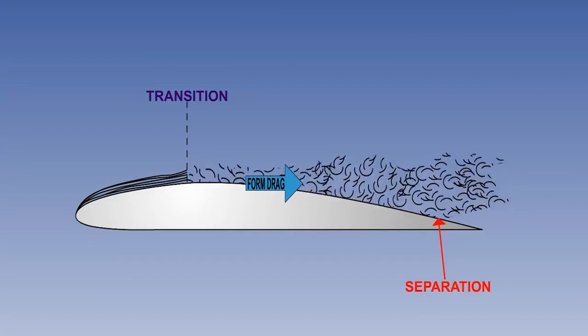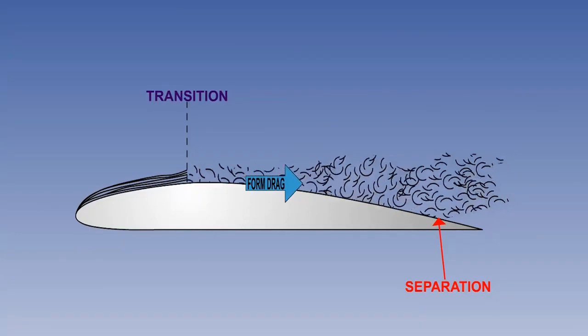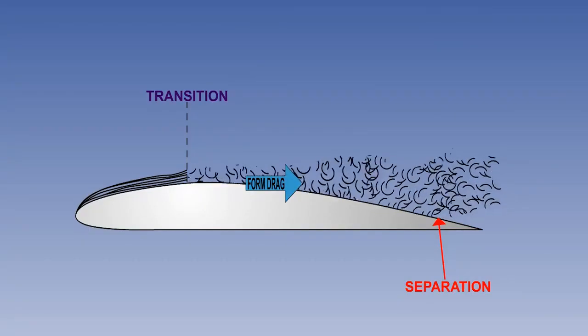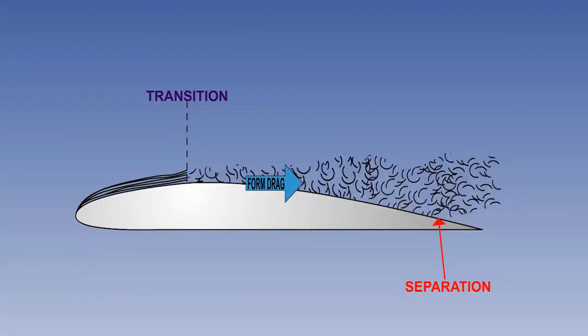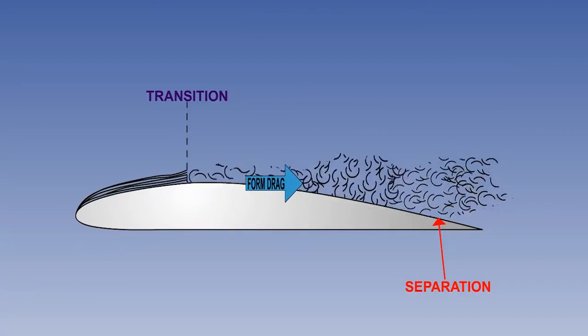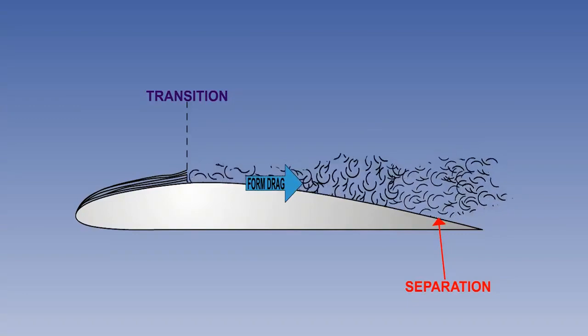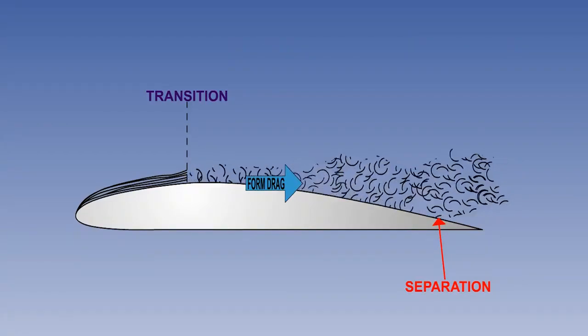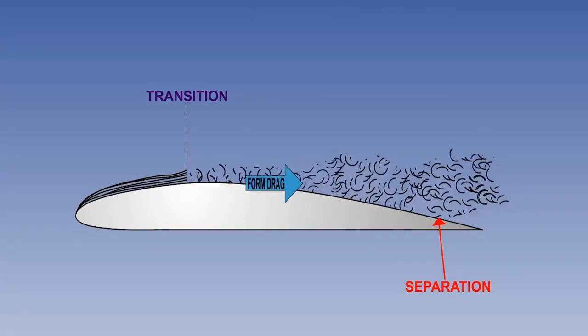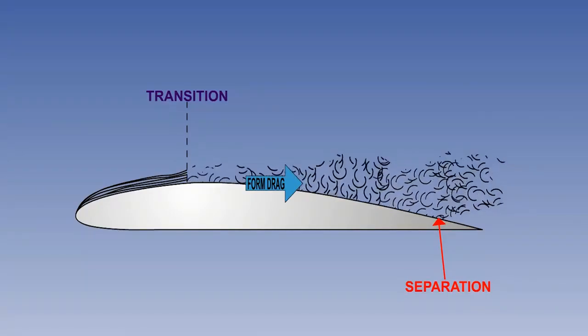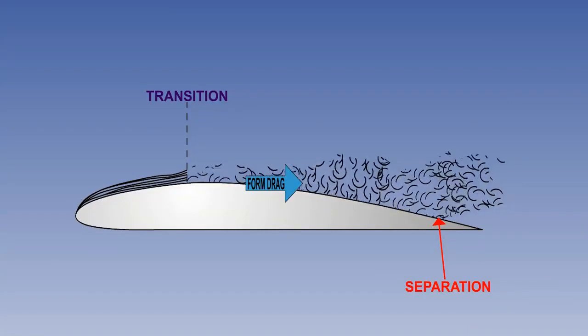Form drag results from the pressure at the leading edge of a body being greater than at the trailing edge, hence its alternative name. Overall, skin friction causes a continual reduction of boundary layer kinetic energy as flow continues back along the surface. The adverse pressure gradient after the transition point also causes a further drop in kinetic energy. If there is insufficient kinetic energy to overcome the adverse pressure gradient, the lower levels of the boundary layer stagnate, and the upper levels overrun them, causing separation.